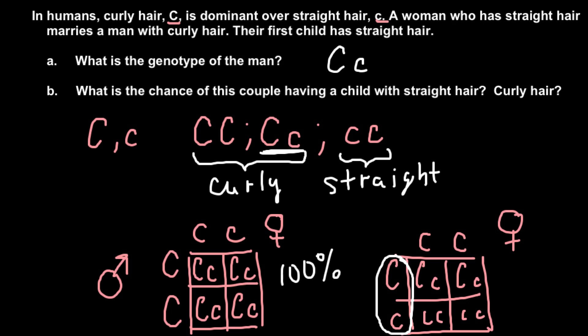And question B: What is the chance that this couple has a child with straight hair? So as you see, straight hair—we have 2 out of 4, or we also can say one half or 50%. All three are the same. So this is going to be the answer for straight hair: 50%.